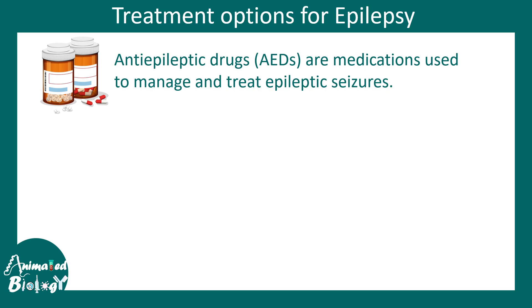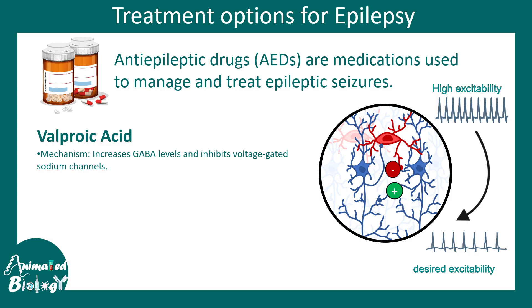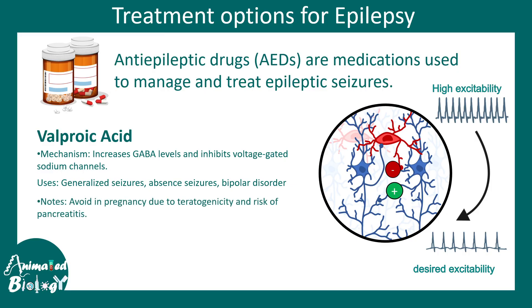All anti-epileptic drugs come with some drawbacks or side effects. For example, valproic acid — the most commonly used — increases GABA levels and also inhibits voltage-gated sodium channels. However, it can reduce excitability to a desired level but is toxic during pregnancy — it is teratogenic — and therefore cannot be used when a woman is pregnant and experiencing seizures. It is used to treat generalized seizures, absence seizures, and bipolar disorder.